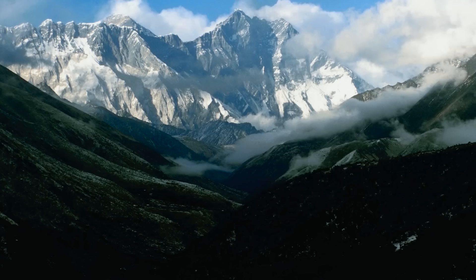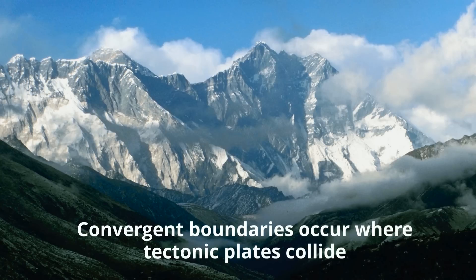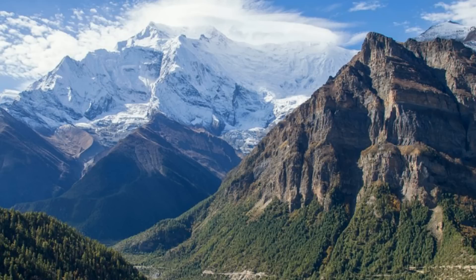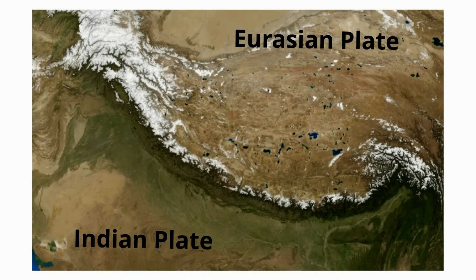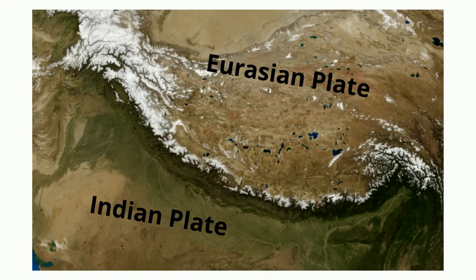Folded mountains form when rock layers are pushed together and also pushed upward. Many folded mountains occur at convergent boundaries where continental crusts collide. The Himalayas stretch throughout the borders of China, Nepal, India, and Pakistan, forming a towering mountain range. Here, the Indian Plate is colliding northward with the Eurasian Plate.